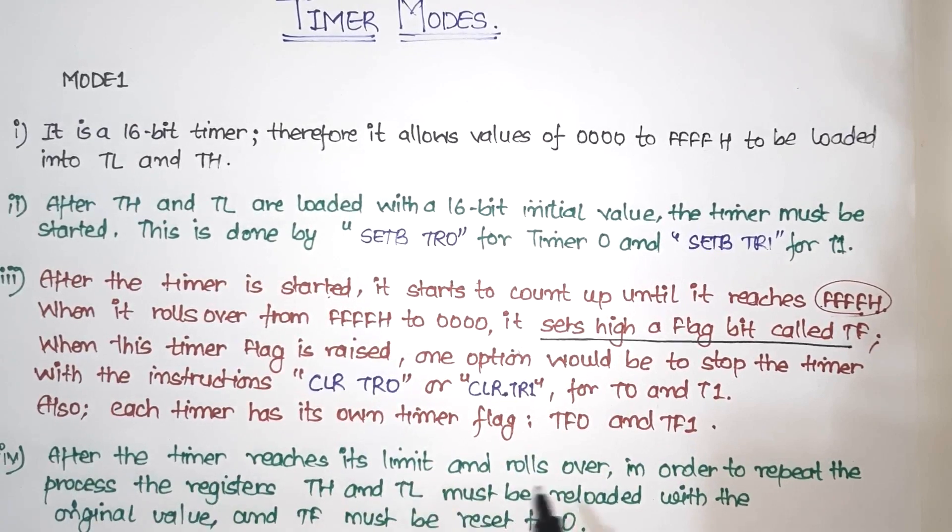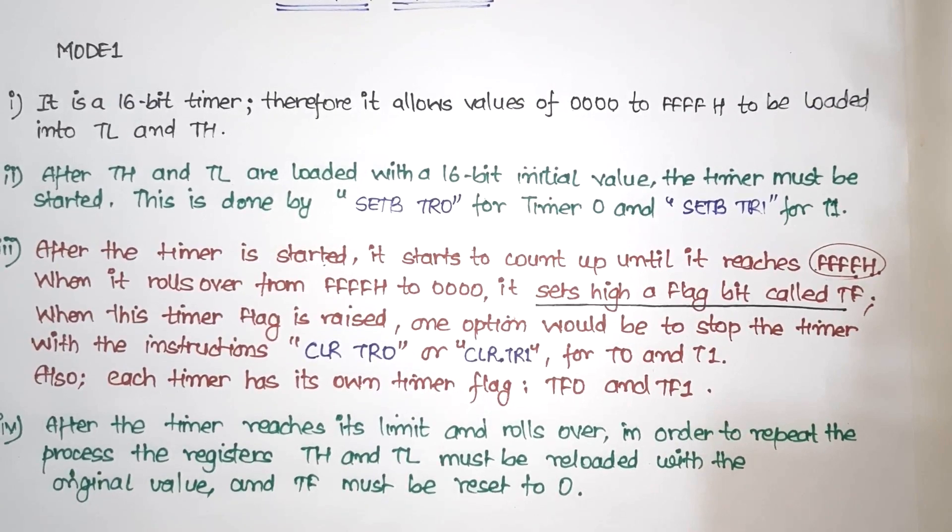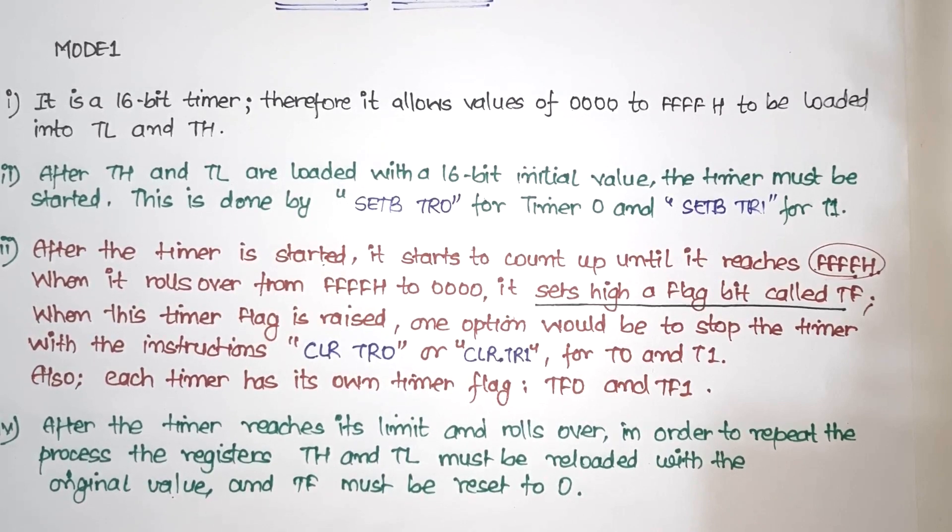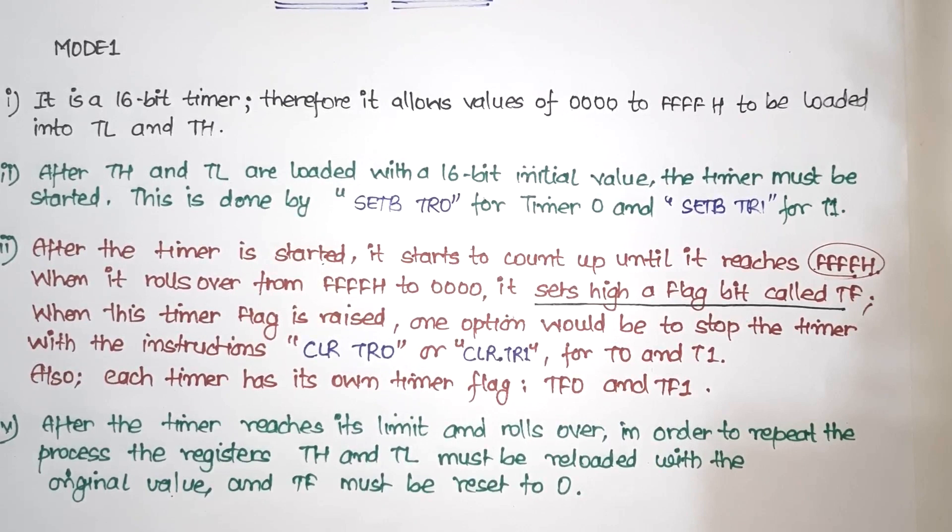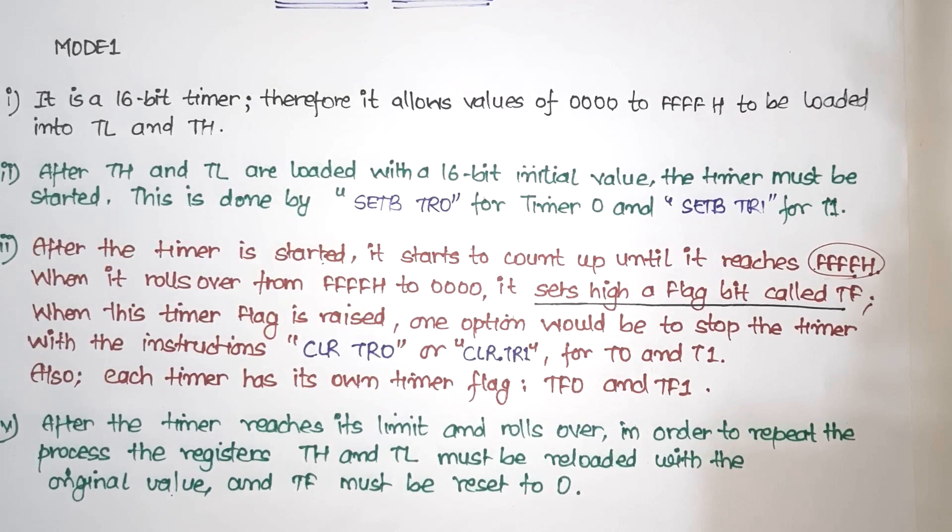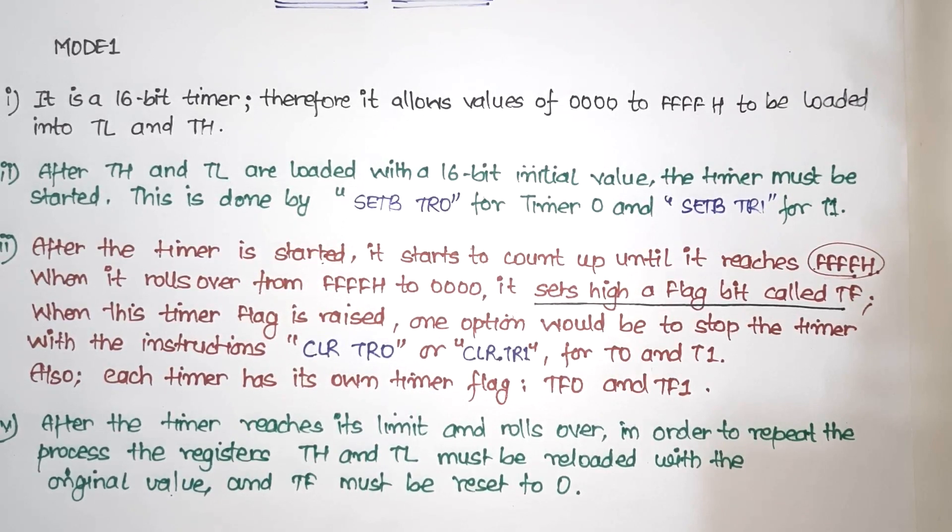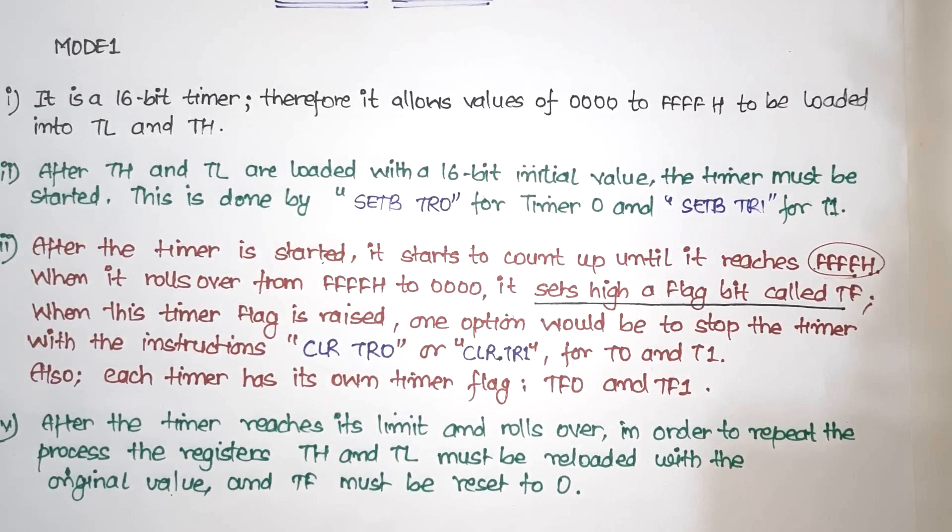After the timer reaches its limit and rolls over, in order to repeat the process, if we don't stop it but put the same loop in the process, the registers TH and TL must be reloaded with the original value. And TF must be reset to 0. Once we load the initial value, then it will go to its maximum value. After it reaches FFFH, then it will come back to 0. So TF is doing 1. If we want to clear it, we will use clear instruction. Otherwise, we will load our original value in TH and TL, and TF is doing 0.